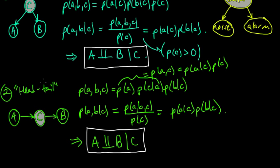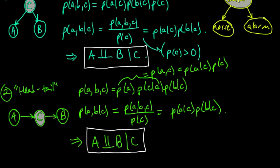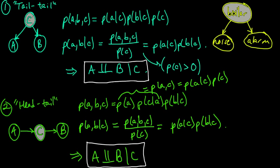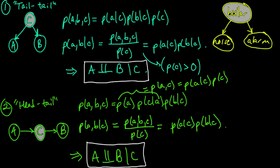So at least in these two cases, we have this property that when you condition on the variable in the middle, the other two are conditionally independent. Let me also give you an example continuing our story from before.